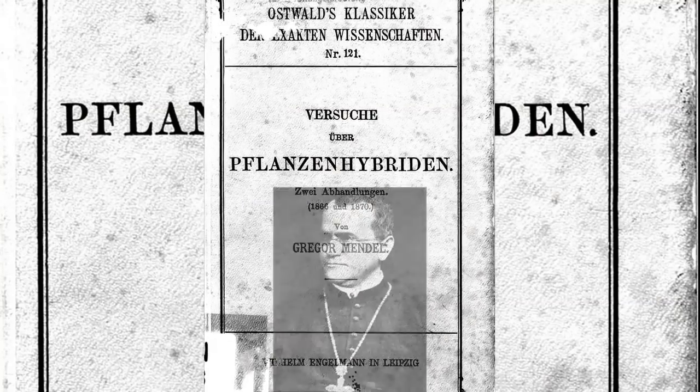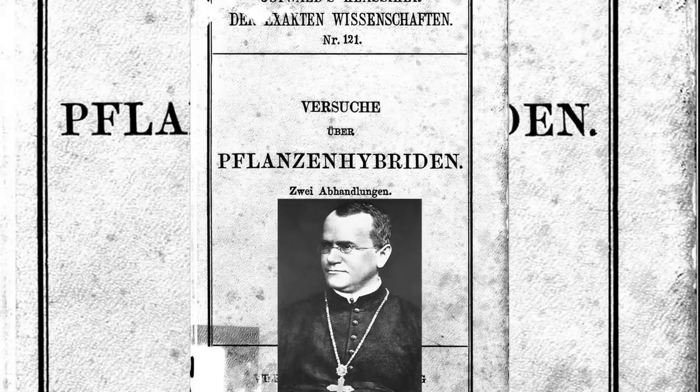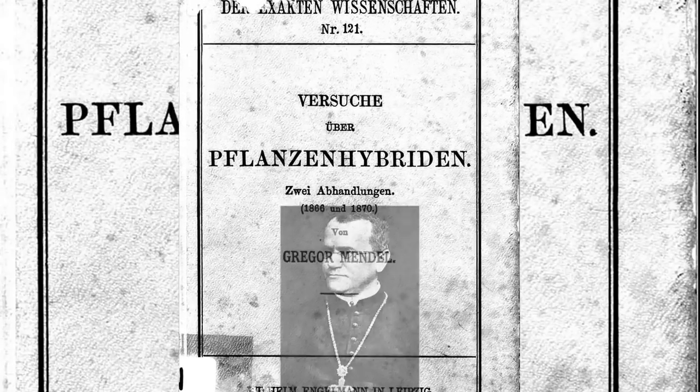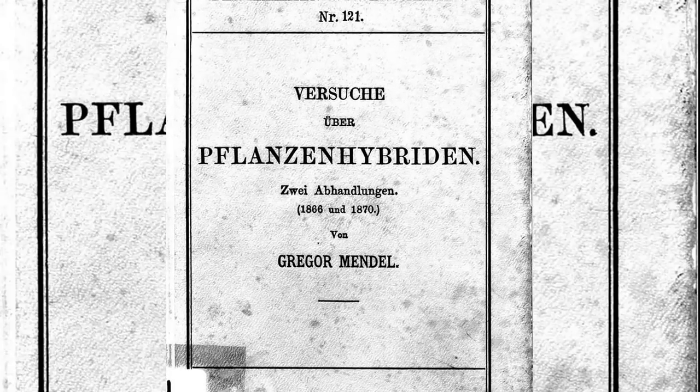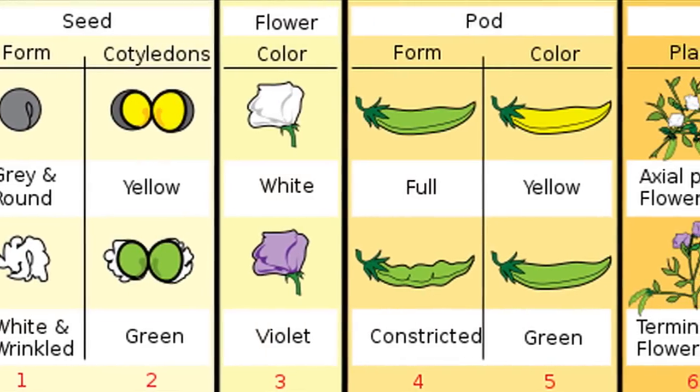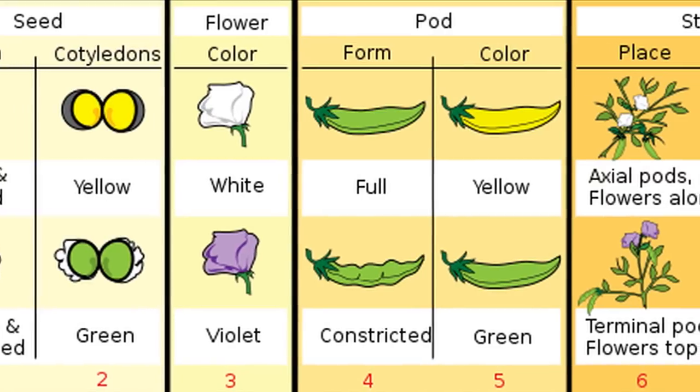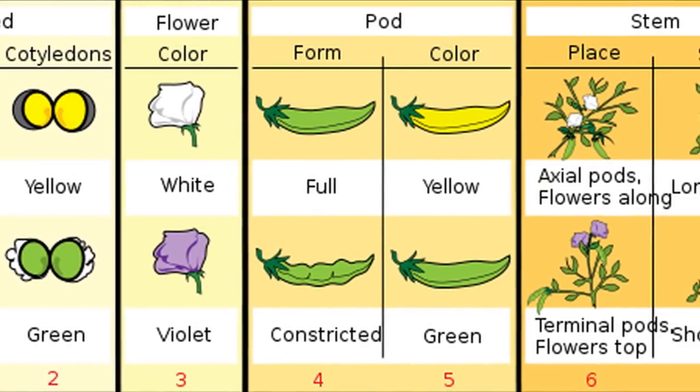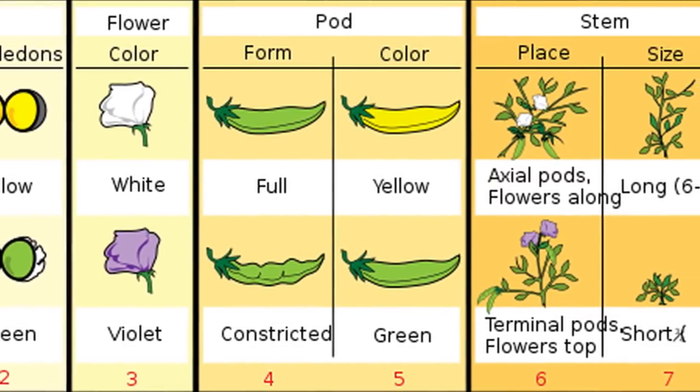In 1865, Gregor Mendel, Augustinian friar and abbot of St. Thomas' Abbey in Moravia, presented his paper on experiments on plant hybridization. He showed relationships between the frequency of particular traits in pea pods, such as seed shape, flower color, pod shape, and even plant height.